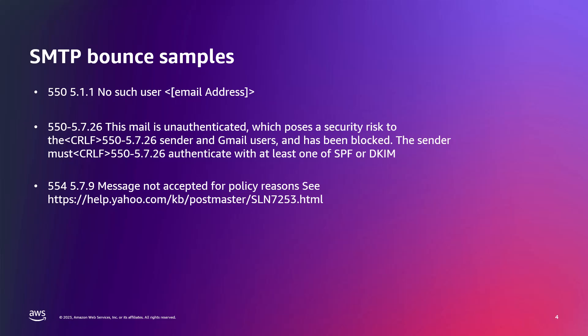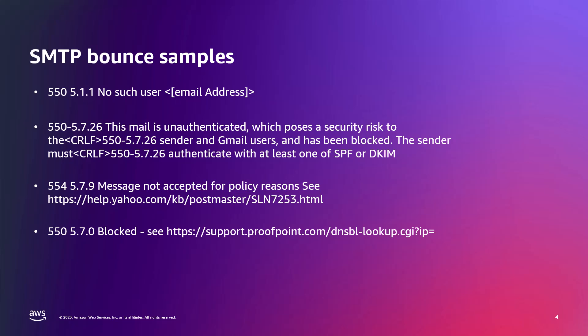At times, mailbox providers ingest data feeds from security companies and third-party resources that include some high-impact real-time block lists, otherwise known as RBLs. The next example shows that messages are being blocked by a mailbox provider based on a public RBL listing. This typically happens as a result of spam trap hits or users' complaints to these services about a particular sender. Senders should be mindful of these types of listings as they can cause deliverability issues across many mailbox providers, not just one.